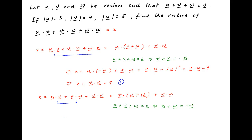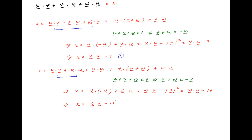Substituting this in the above expression for x, we get x is equal to v dot minus v plus w dot u, which is equal to w dot u minus the absolute value of vector v squared. Now, the absolute value of vector v is equal to 4, therefore x is equal to w dot u minus 16. Let's call this result 2.